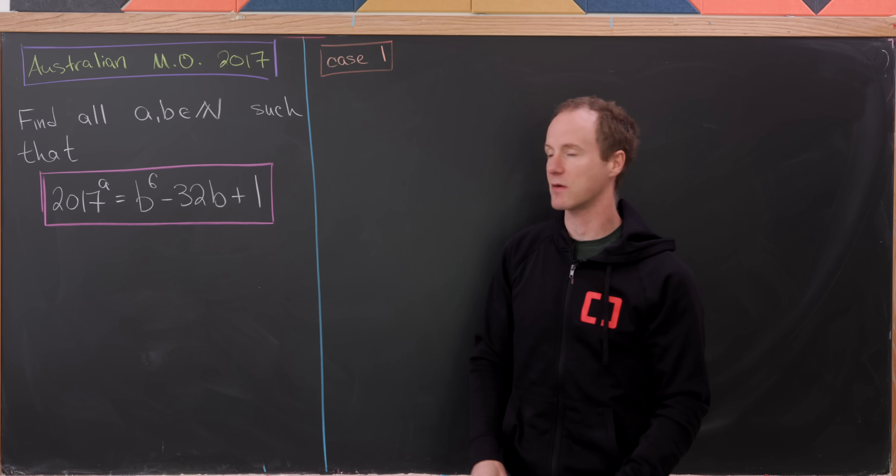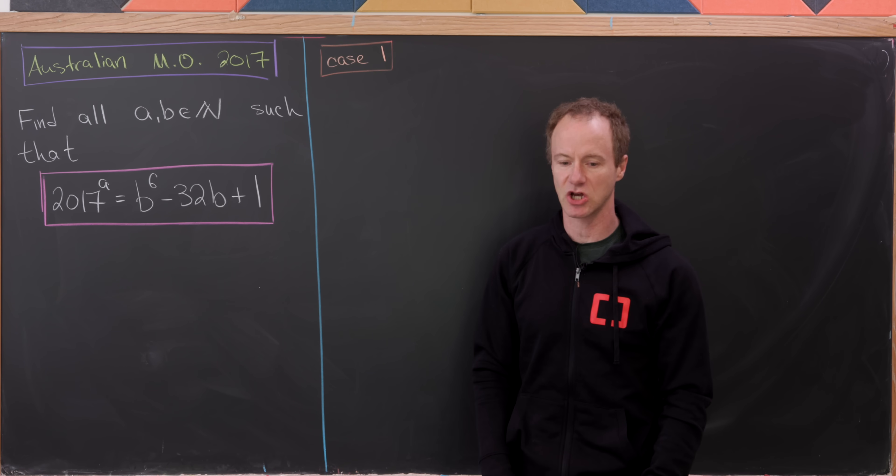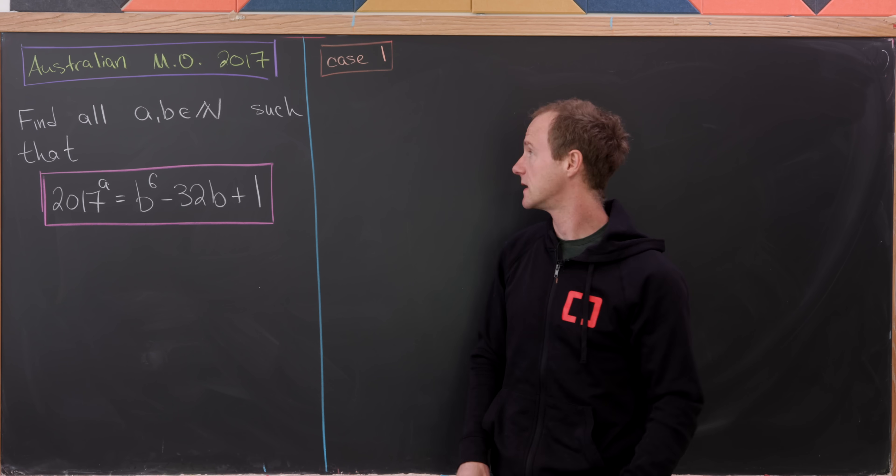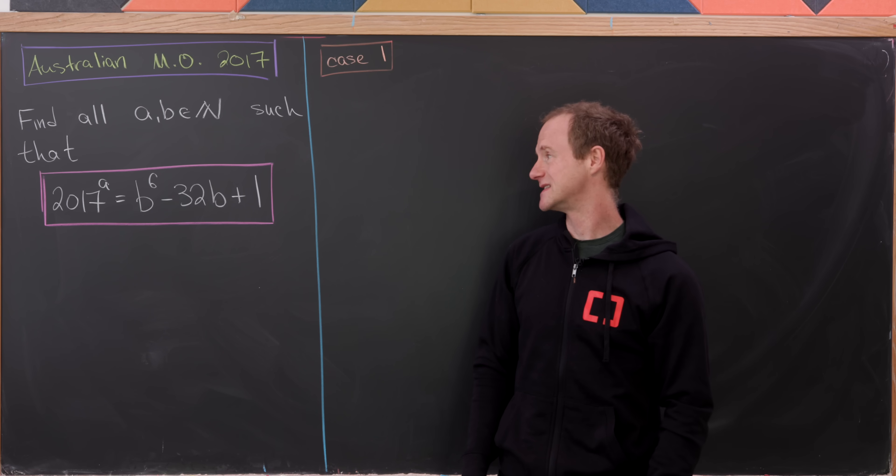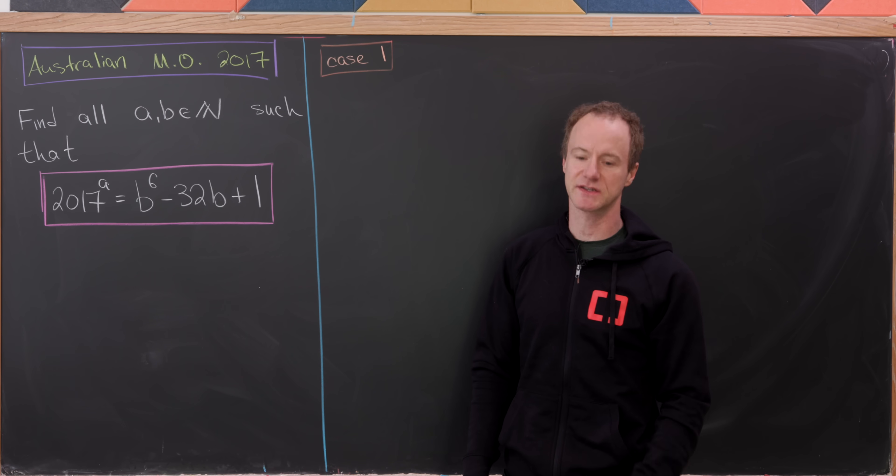Let's check out this nice number theory problem from a 2017 Australian Math Olympiad. Our goal is to find all natural numbers A and B such that 2017^A equals B^6 minus 32B plus 1.